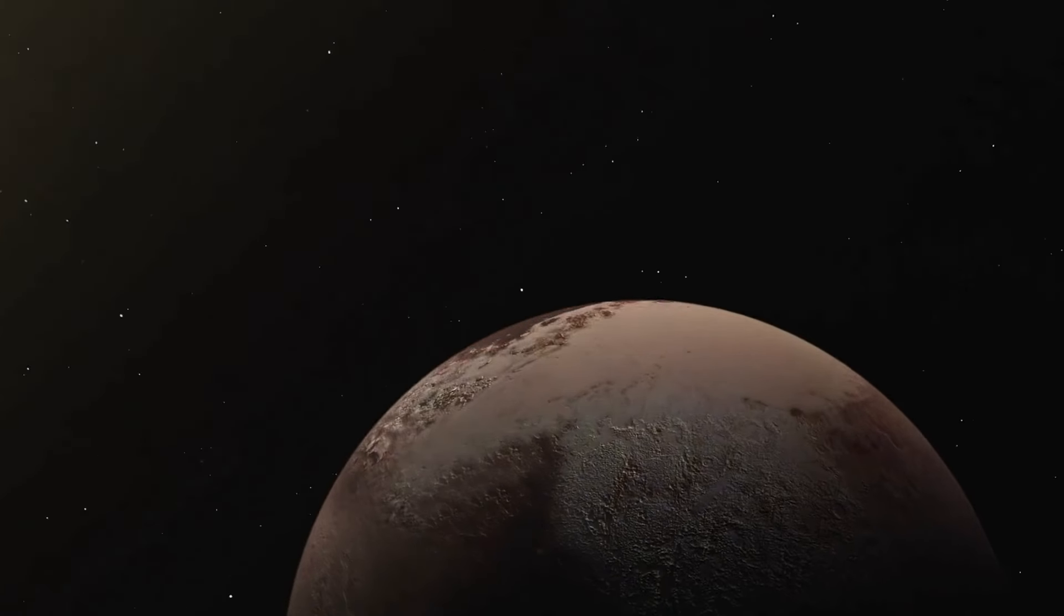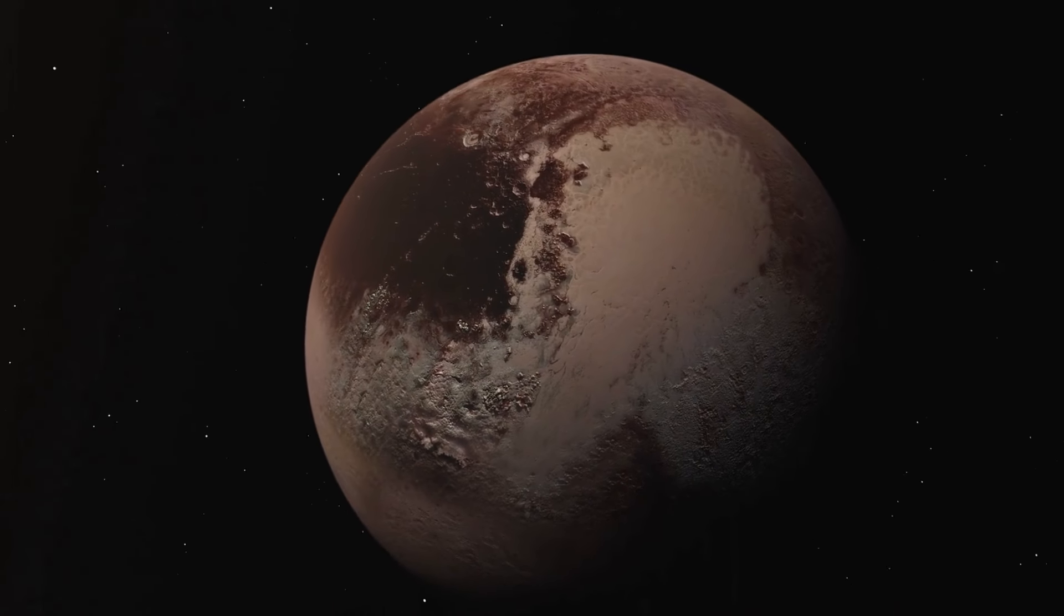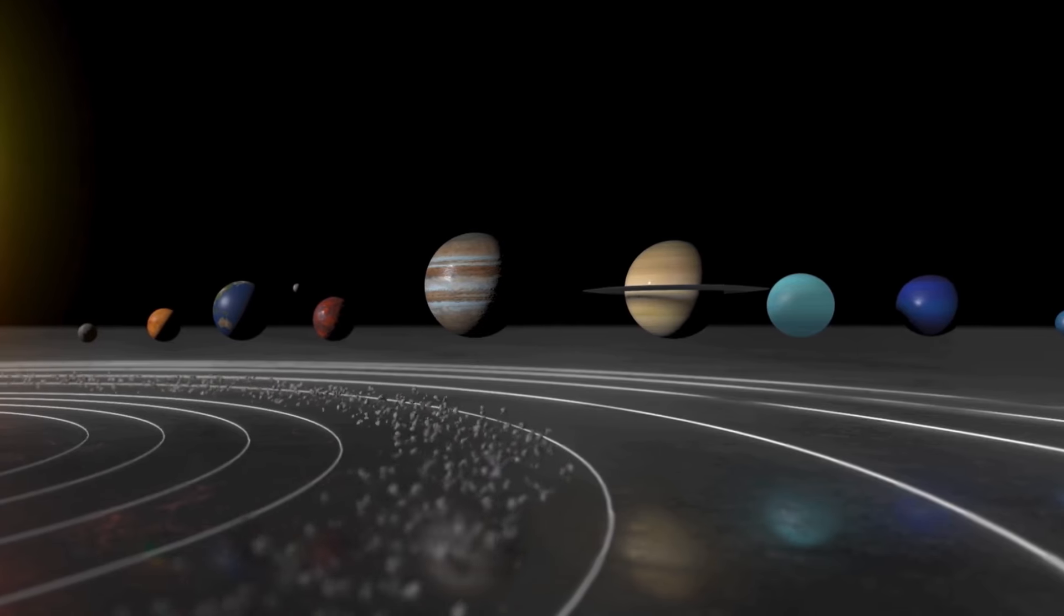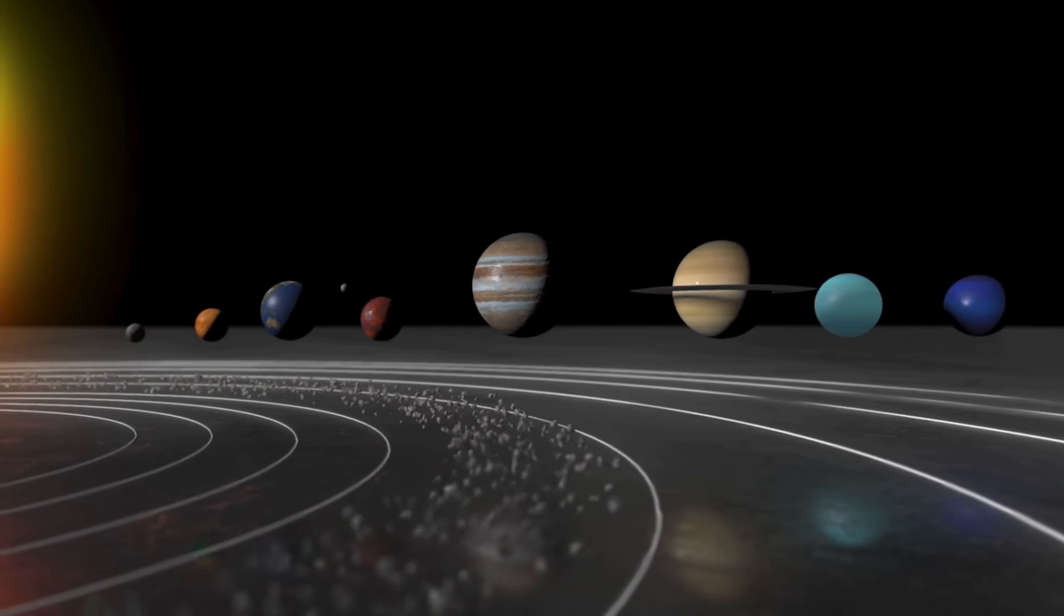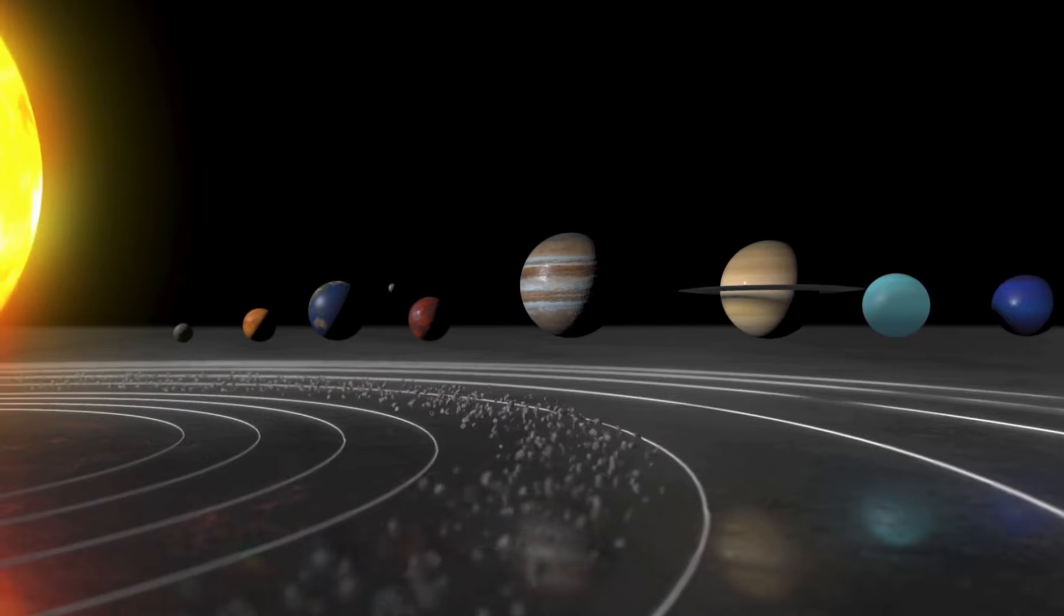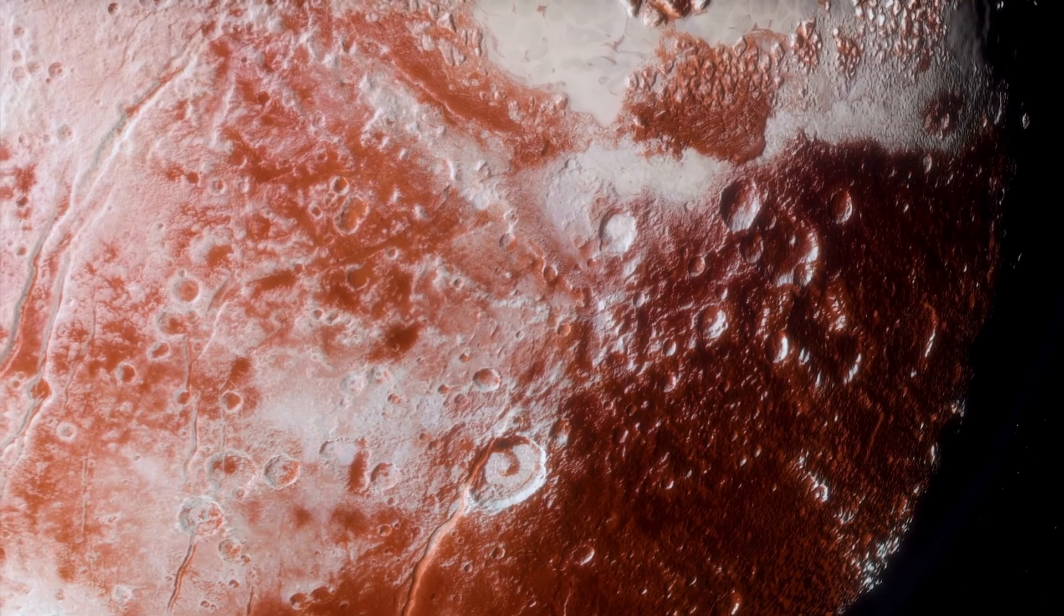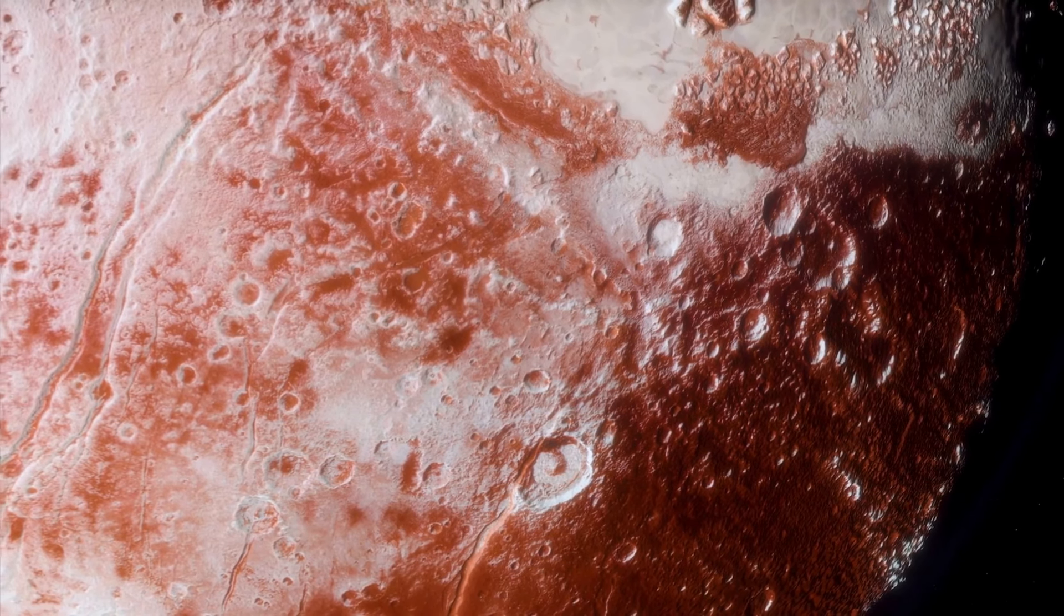The three-body problem in space deals with determining how three objects, such as Pluto, Neptune, and the Sun, move and influence each other through their gravity. It's like trying to predict their positions based on where they start and how they pull on each other. For Pluto, this problem reveals the interactions between its orbit, Neptune's orbit, and the Sun's gravity.